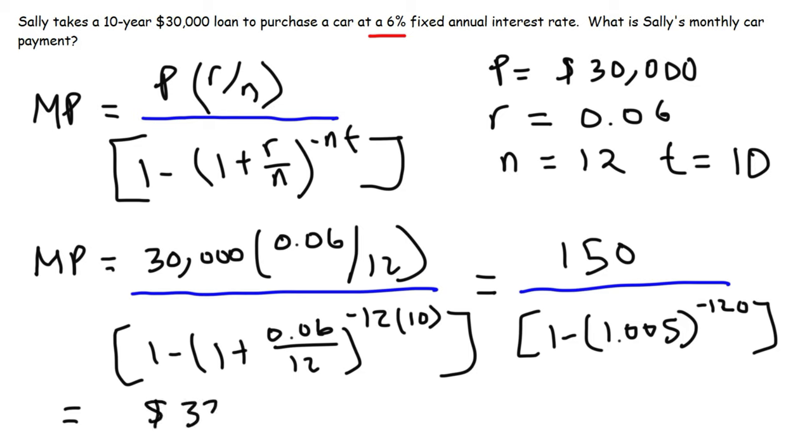So the final answer is $333.06. So that will be Sally's monthly car payment given this 10-year $30,000 loan.